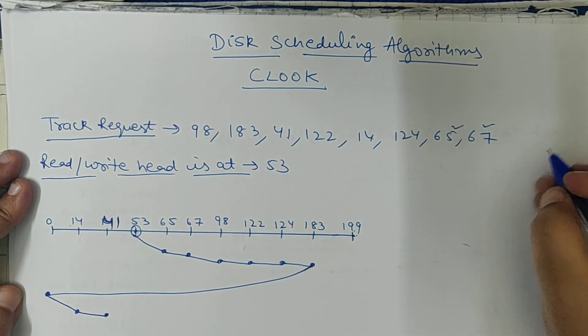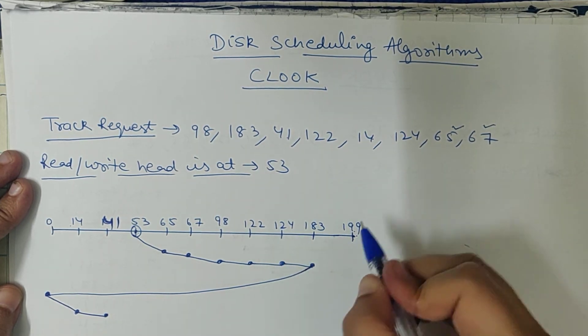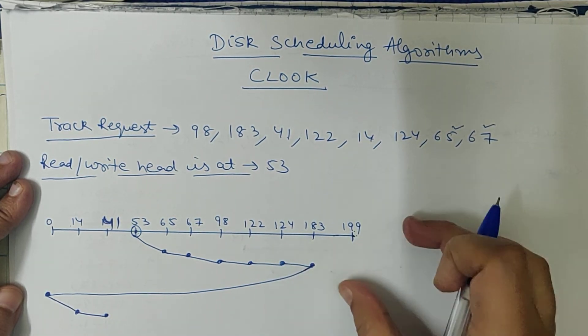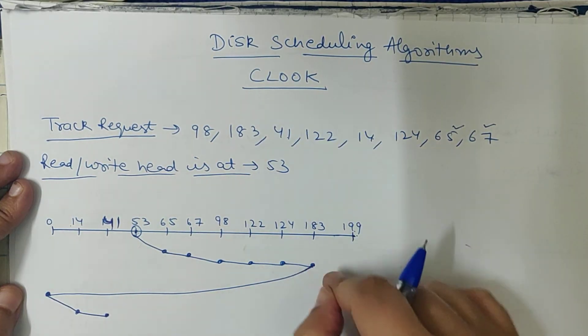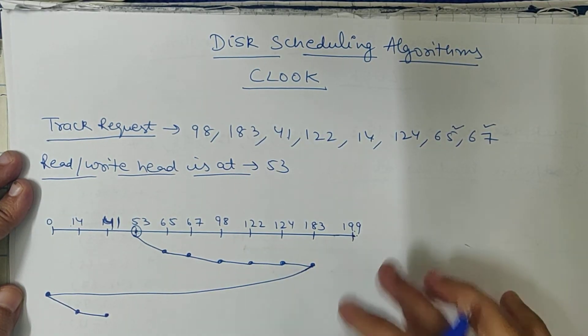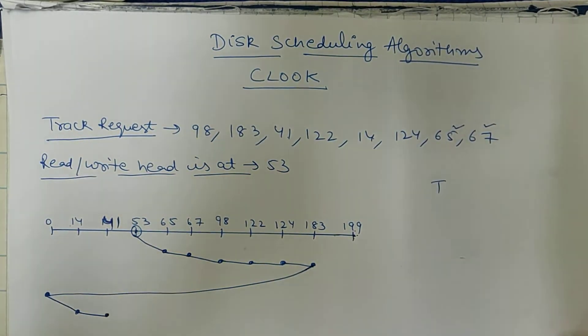So what is the difference in CSCAN and CLOOK? We went to 199 in CSCAN. The rest is exactly the same. We are going to last request in CLOOK. So again we have to find out the total track movement.